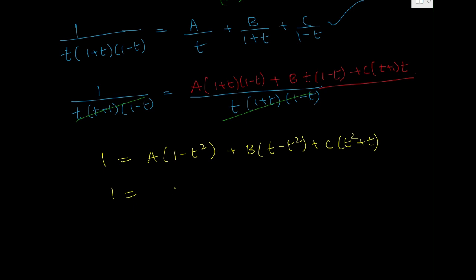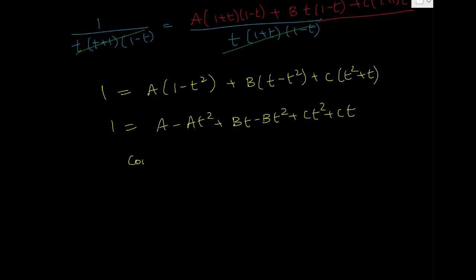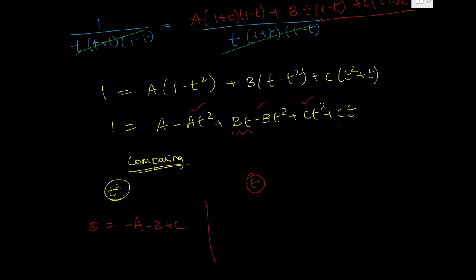Expanding: 1 = A - At² + Bt - Bt² + Ct² + Ct. Now comparing coefficients: for t² terms, 0 = -A - B + C; for t terms, 0 = B + C; for constant terms, 1 = A. So A = 1. Substituting A = 1 into the t² equation: 0 = -1 - B + C, giving B = C - 1.